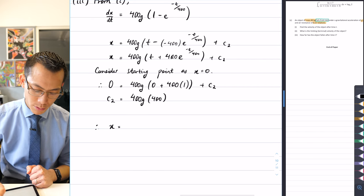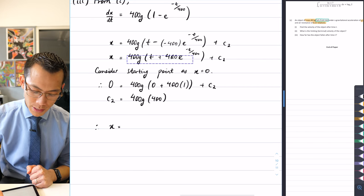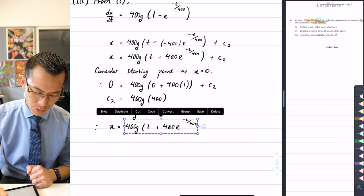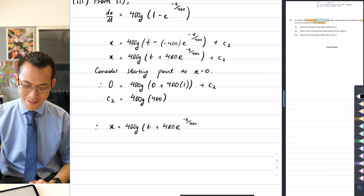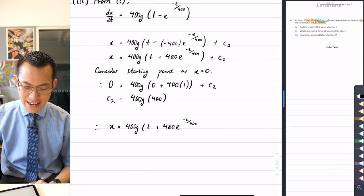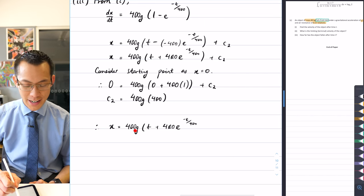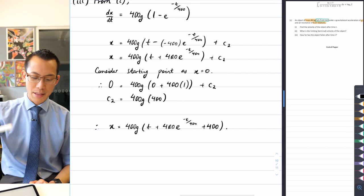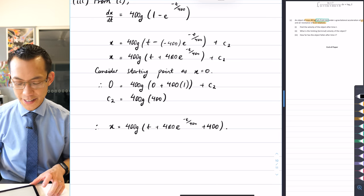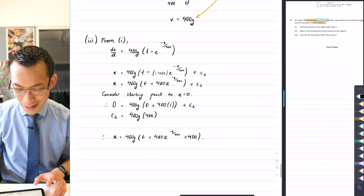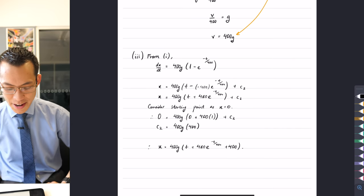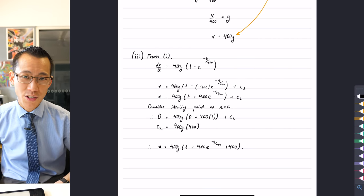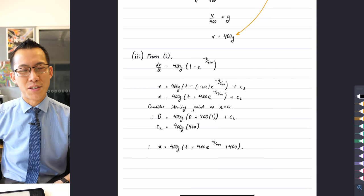I can say therefore x is equal to all of this stuff that we said before. And then when I add my constant, it's 400g times 400. So there's going to be a 400 also appearing in the brackets, and that's it. So well done if you got that far. It was a pretty tough paper overall, and lots of opportunities to really challenge yourself, but hopefully you learned something as you went through these questions.